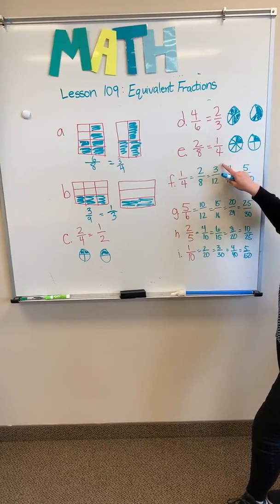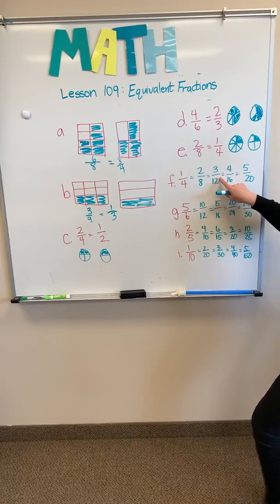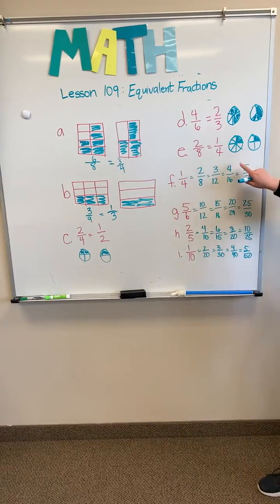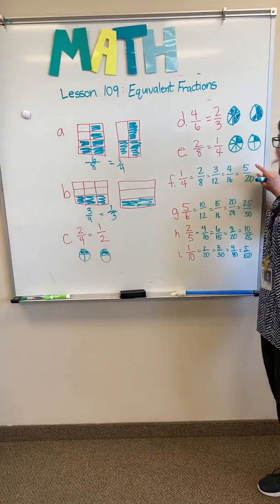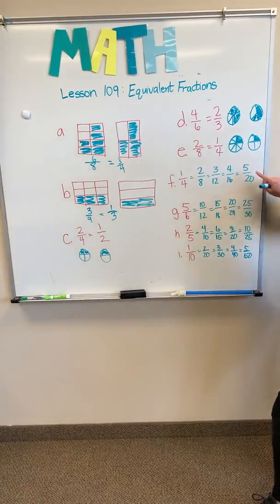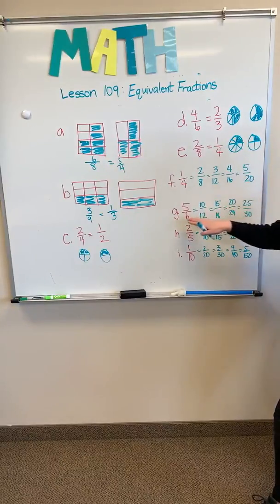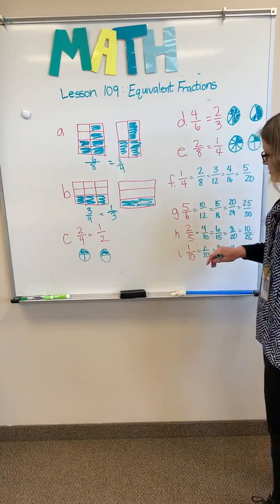By 3 over 3 is 3 twelfths, multiplying it by 4 over 4 is 4 sixteenths, and multiplying it by 5 over 5 is 5 twentieths. We want you to do the same thing for 5 sixths.